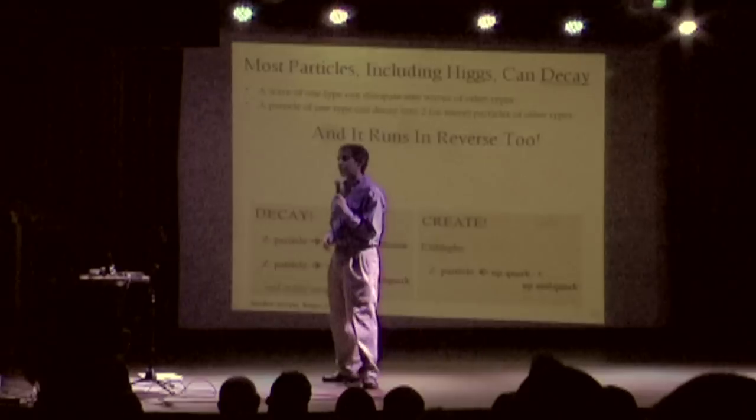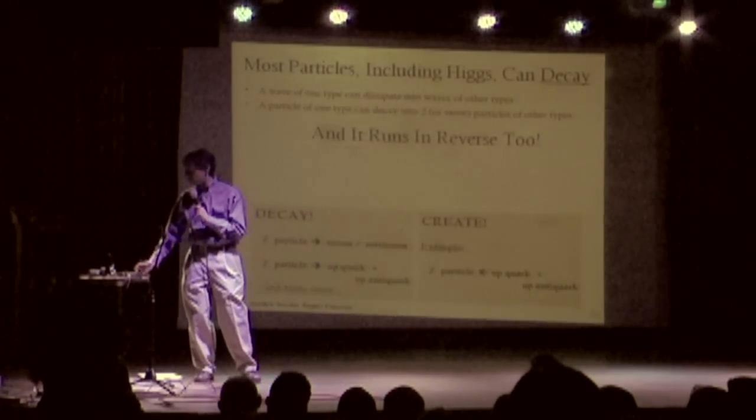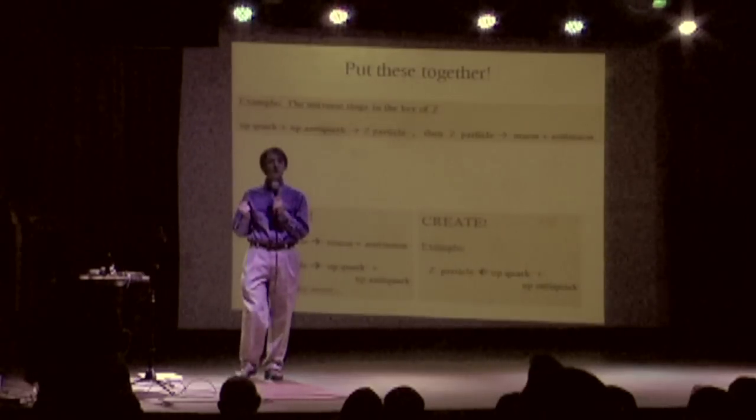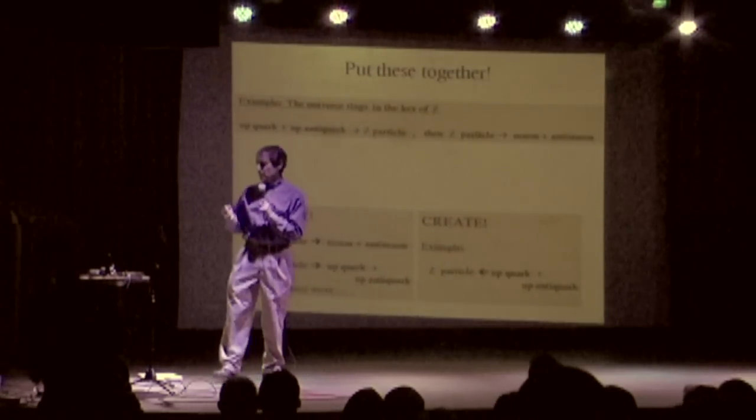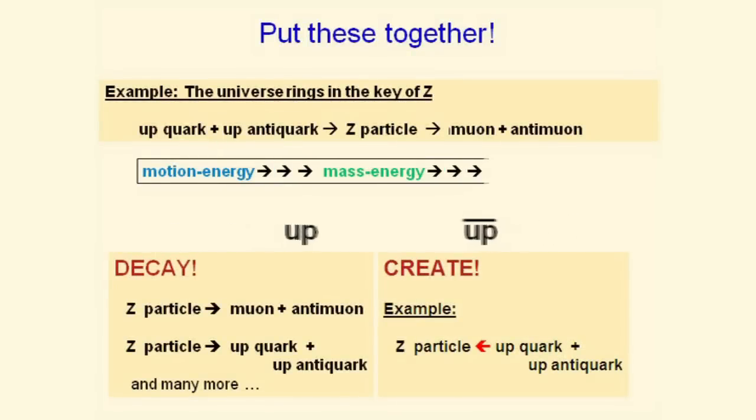Now, remember, we have upquarks and up-anti-quarks in our protons. So we can take two protons and smash them into each other, put these two things together, and make the universe ring in the key of Z.